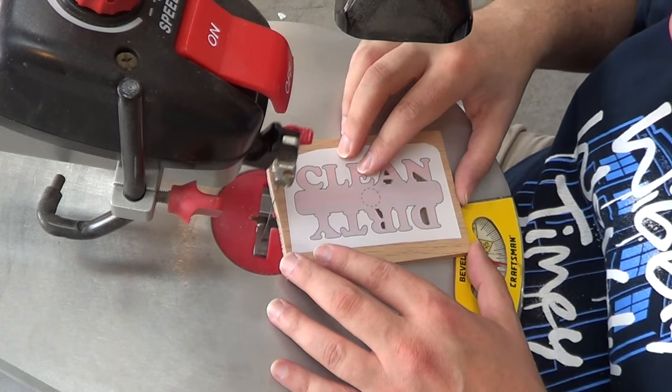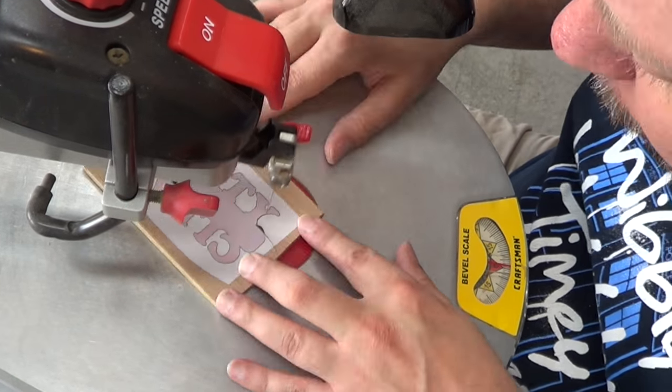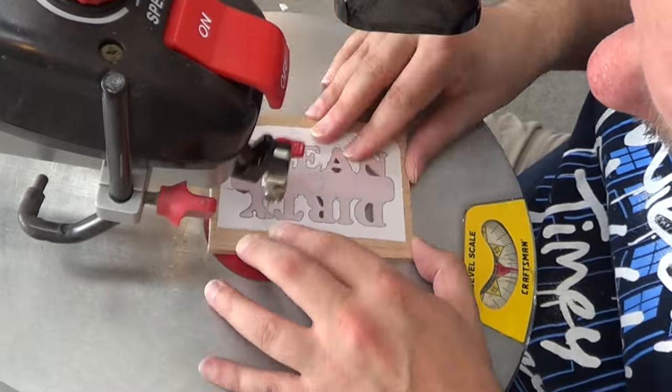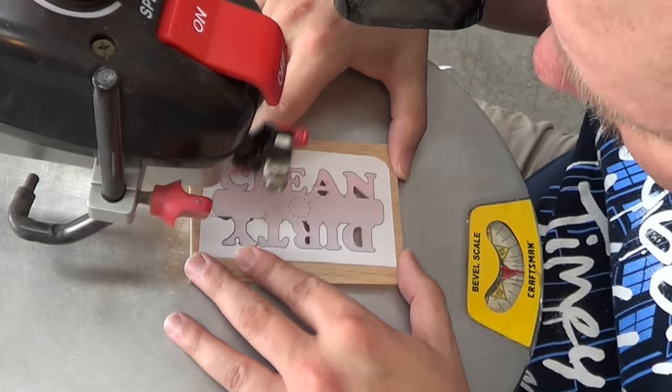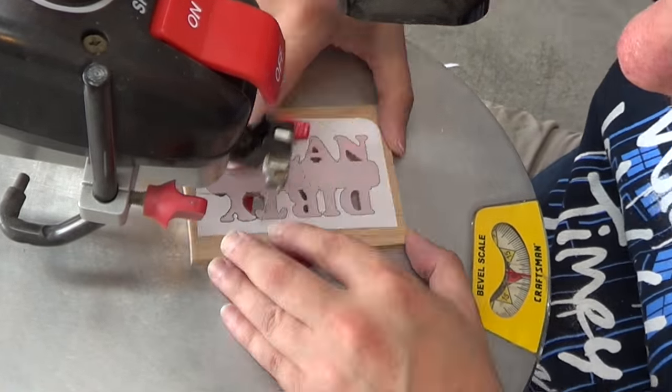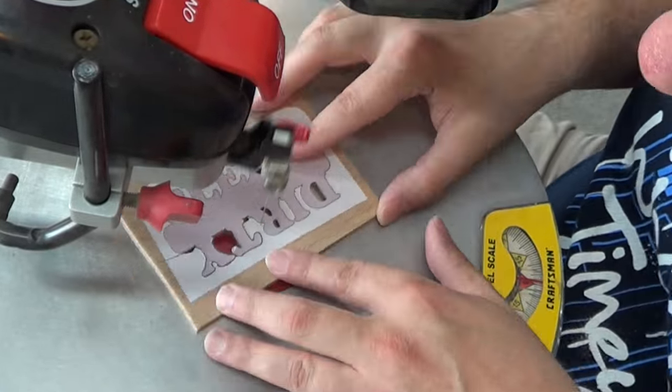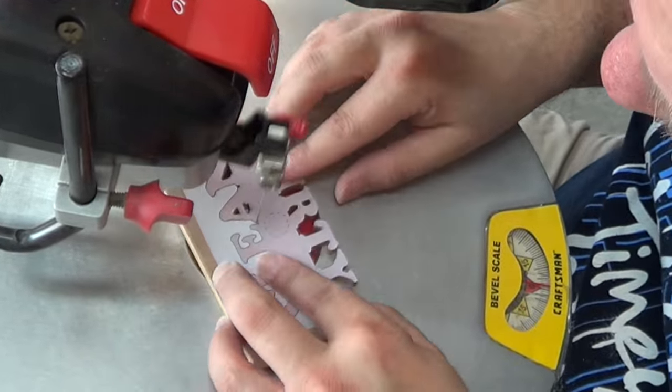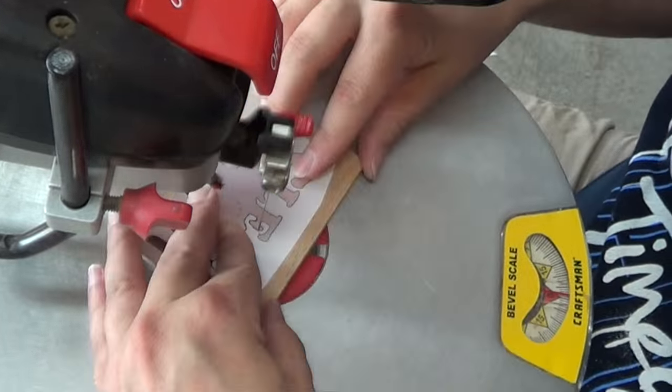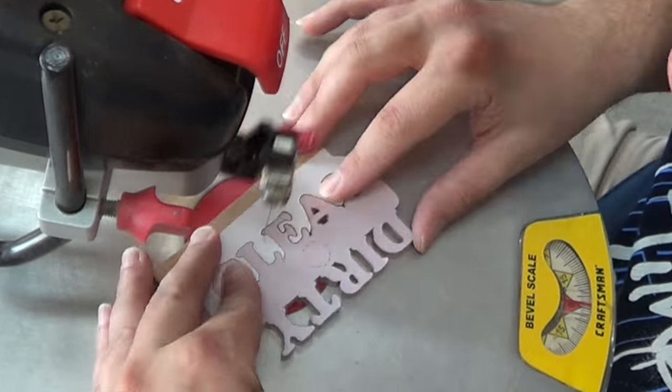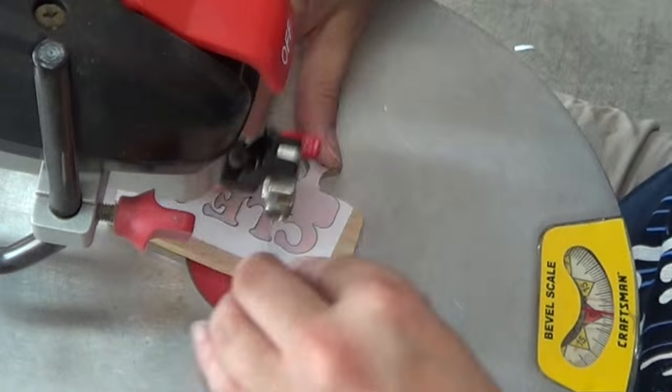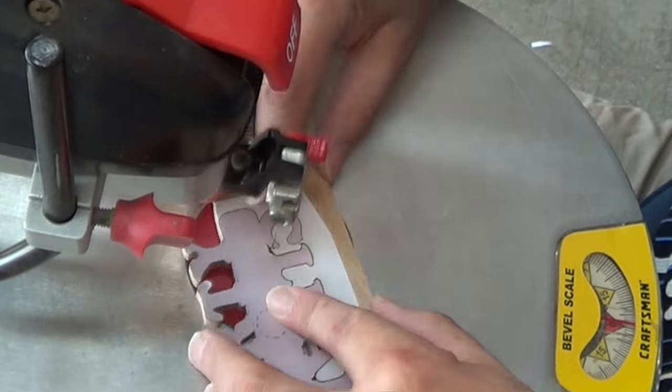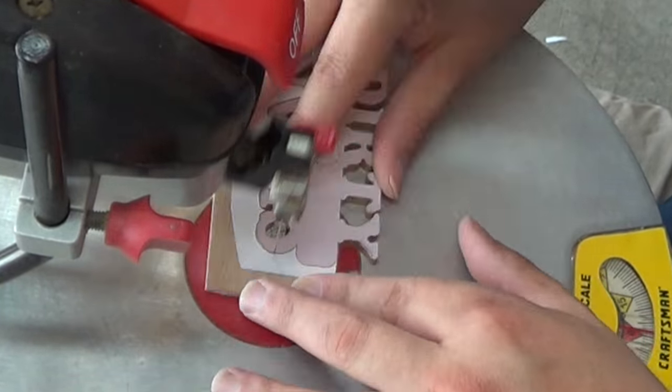And now I'm going to cut the outside. I really wish I could scroll this faster in real life, but I did speed this up considerably. So for this it was pretty easy, we just kind of follow the contour. And then we finally get to the end of the pattern.